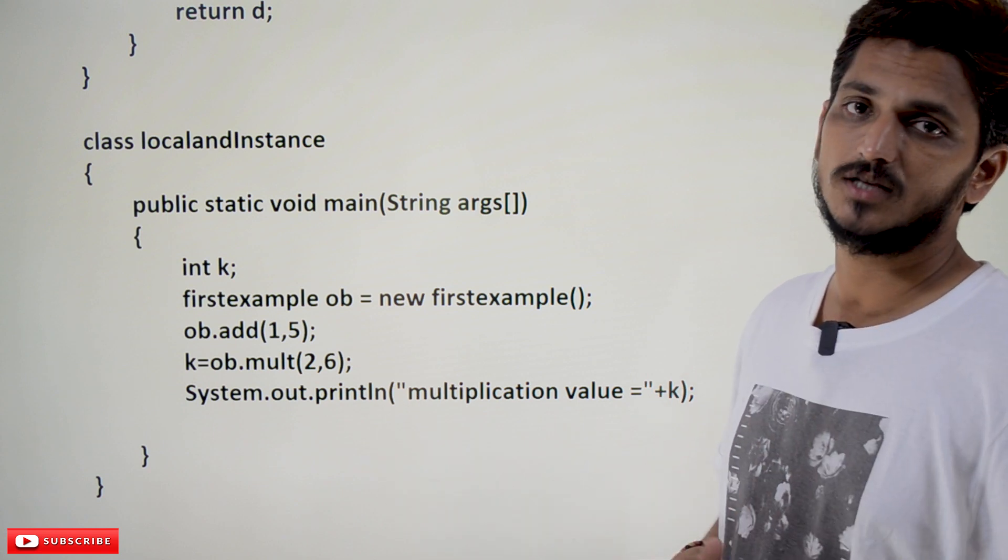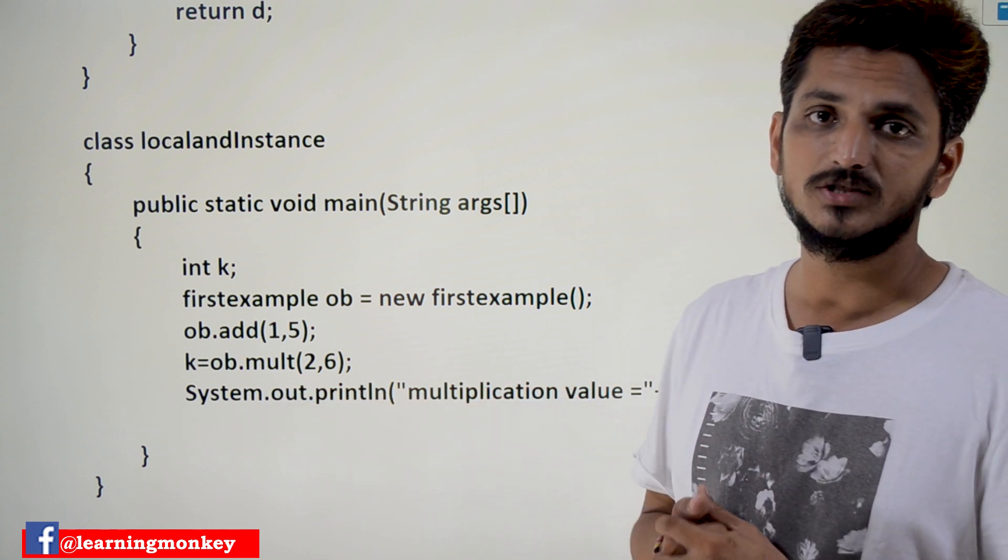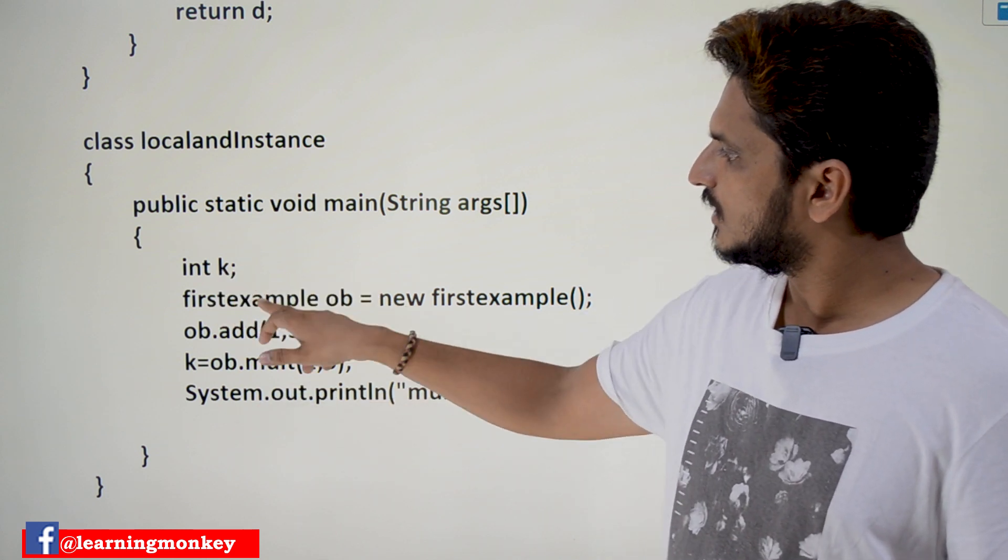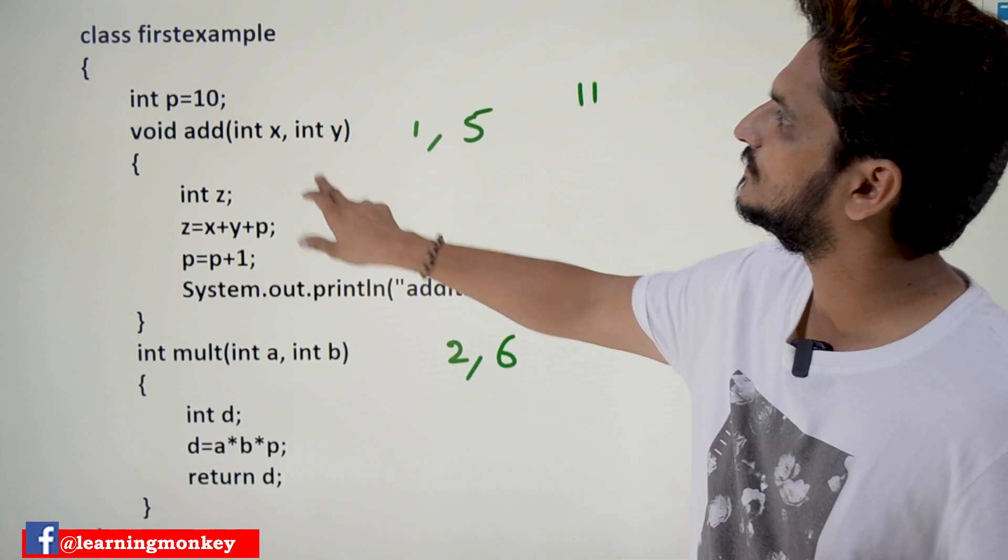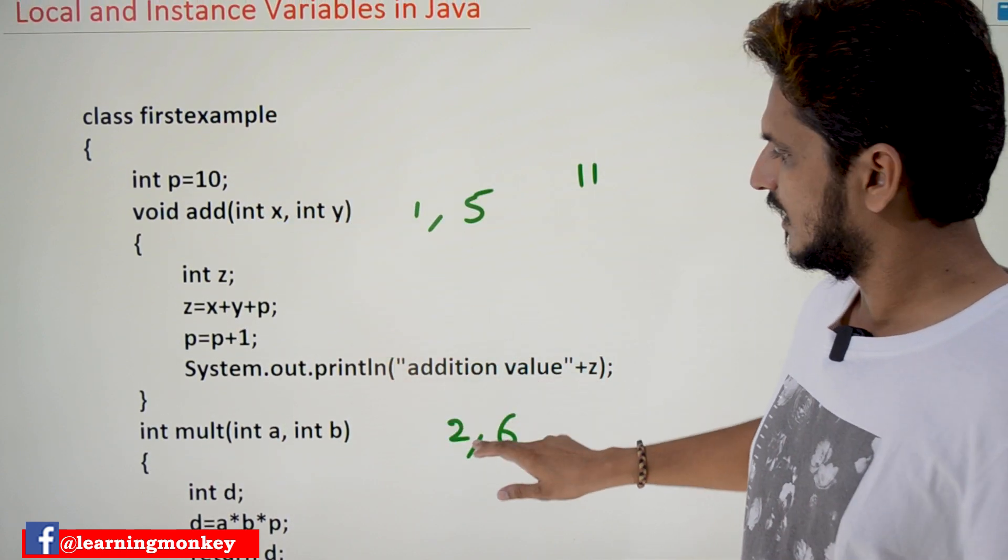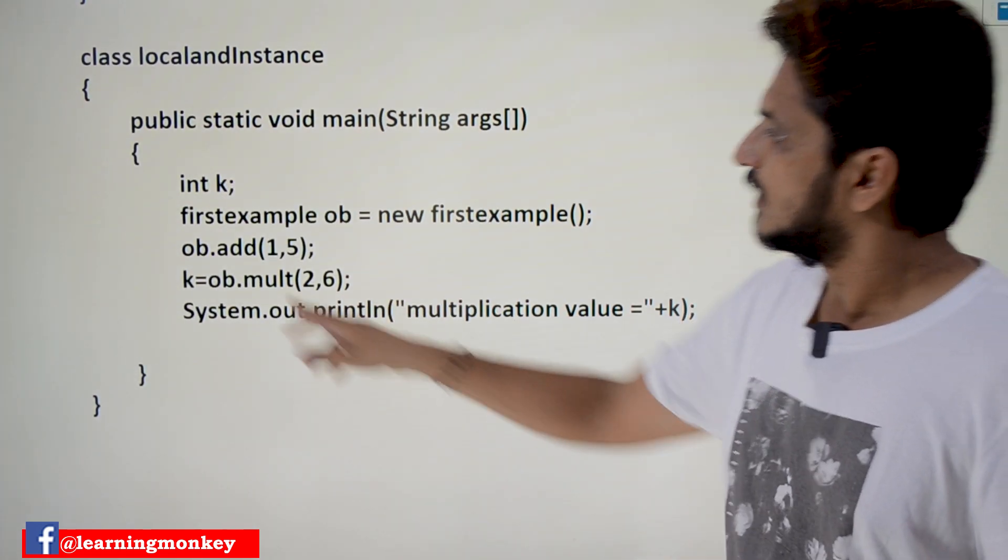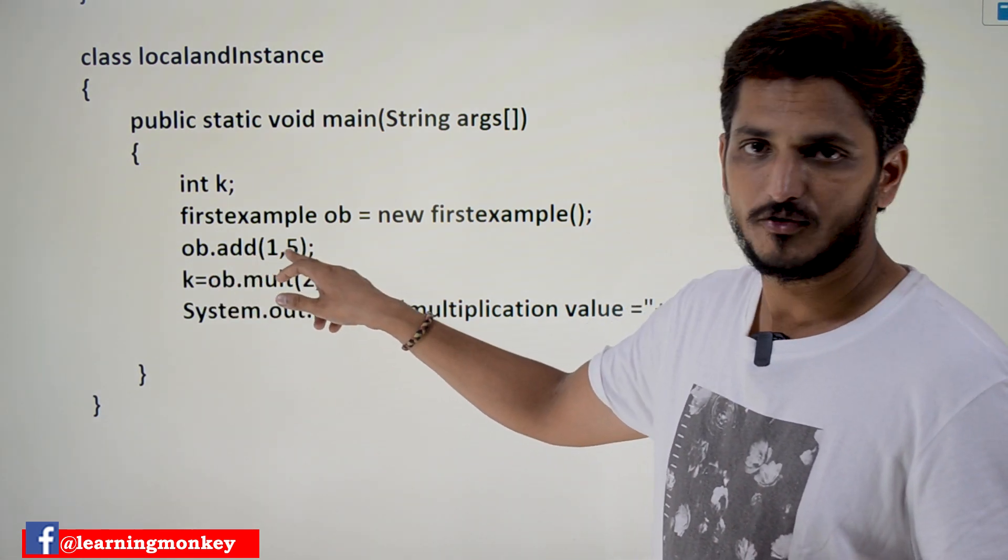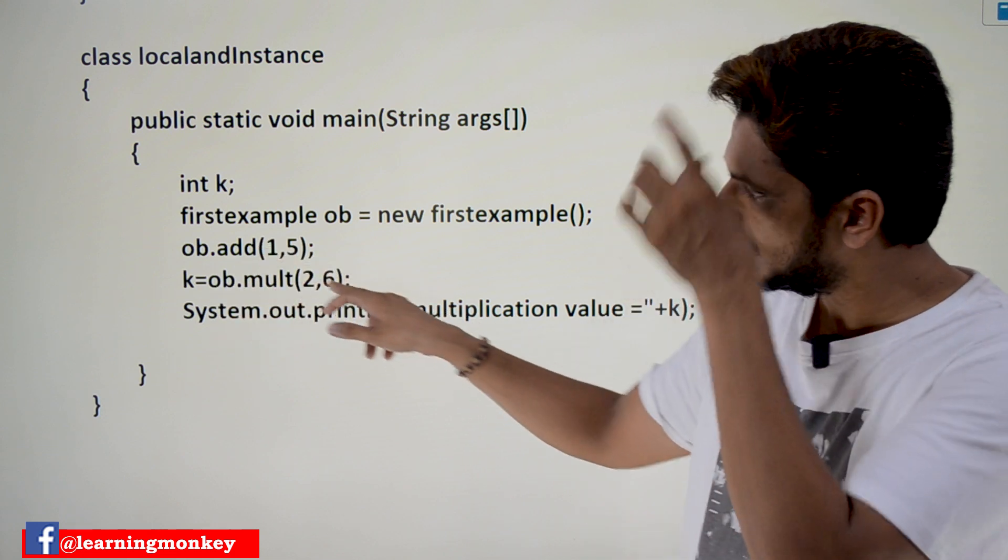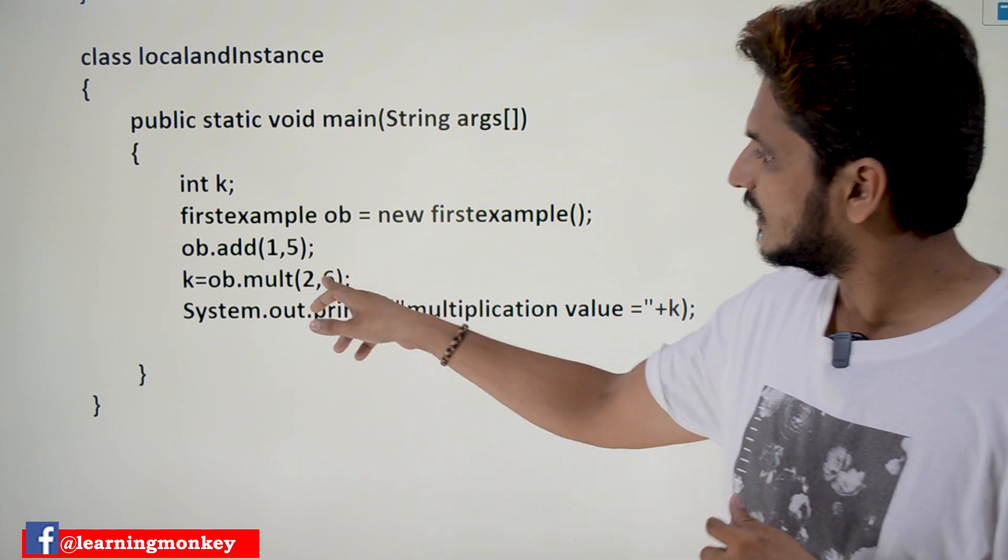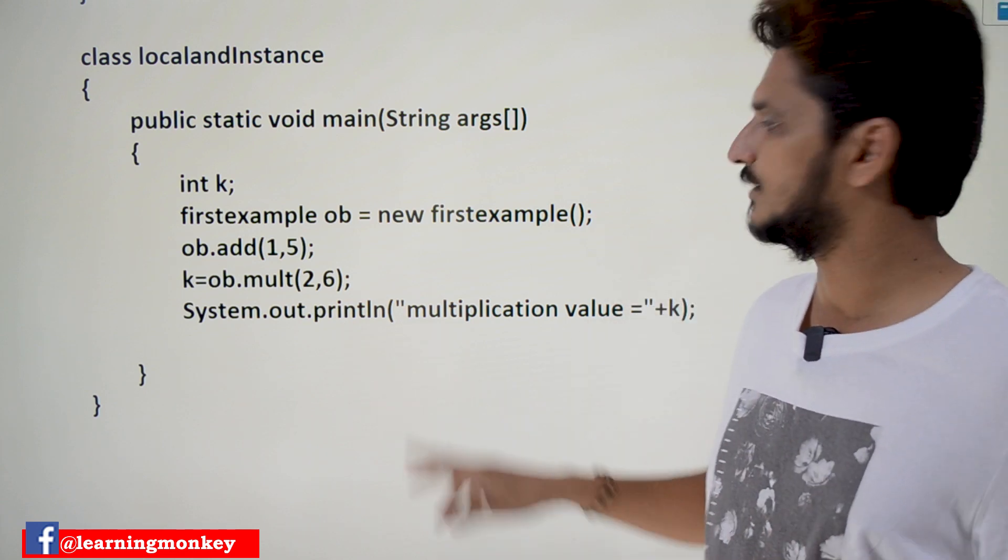This is the point we discussed in our last class. First line, it executes. Second line, third line, fourth line, fifth line. This is how it is going to be executed. In the first line, we defined a variable. In the second line, we defined an object for the class first example. Once object is created, we can use the methods that are present in that class. We call the method ob.addoff with the values 1,5. After completing addoff method, we call the next method ob.multiplyoff with the values 2,6. Now we are going to understand what local and instance variables means.